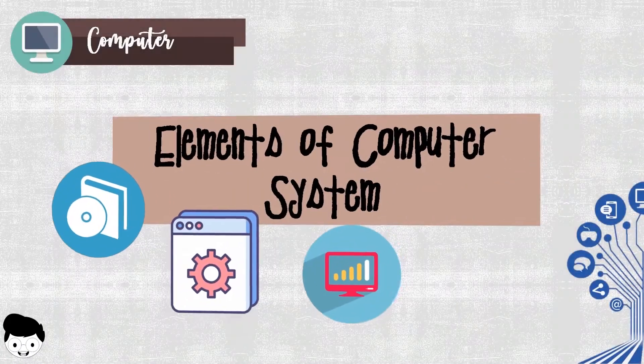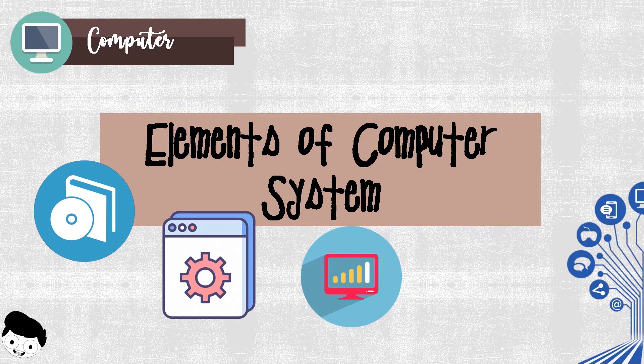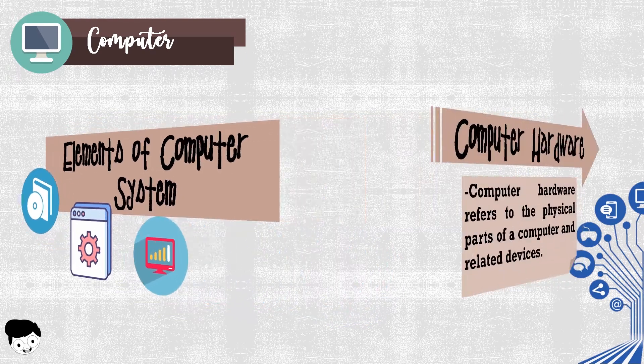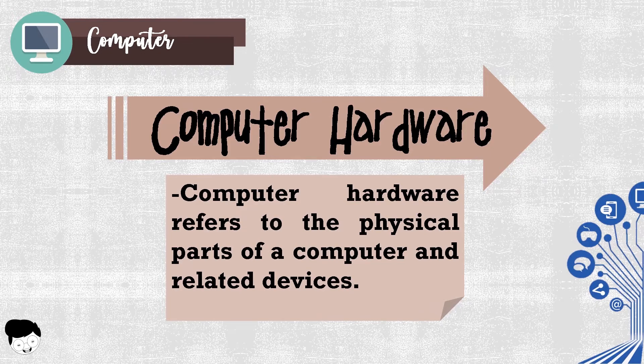We are going to learn the different elements of computer system in 3, 2, 1. What are the elements of computer system? The hardware. Computer hardware refers to the physical parts of a computer and related devices.